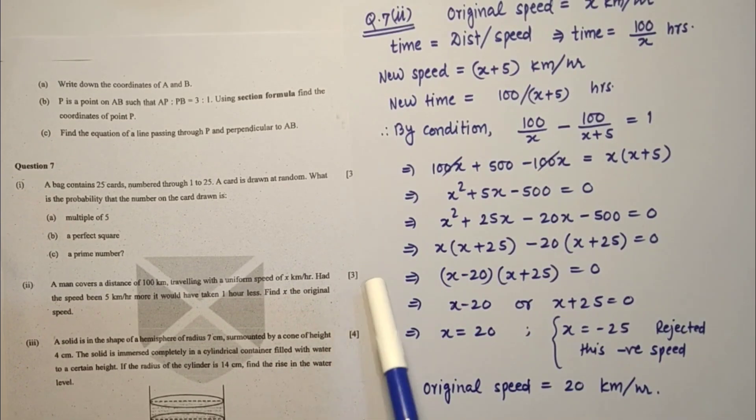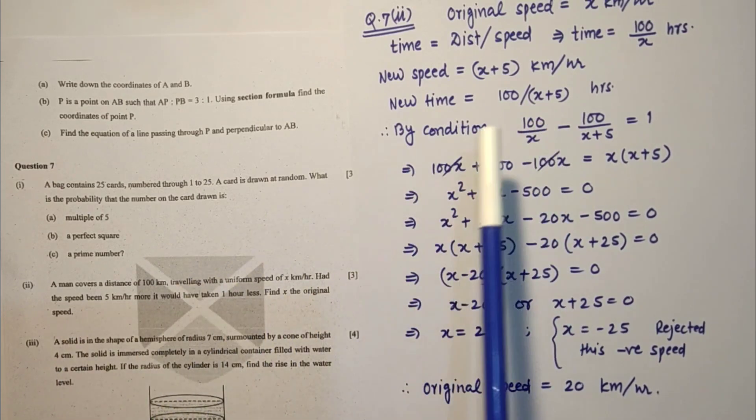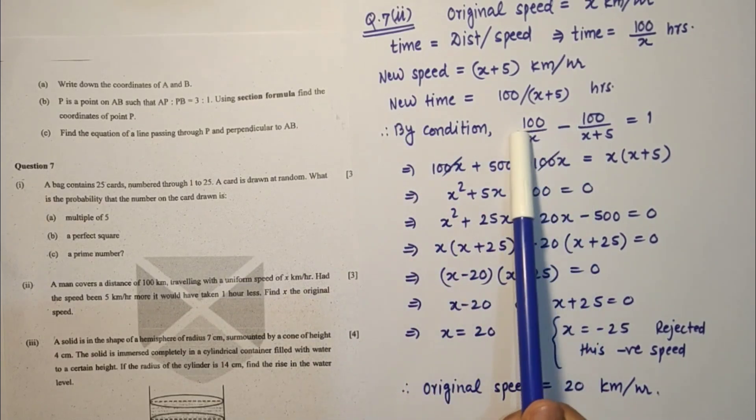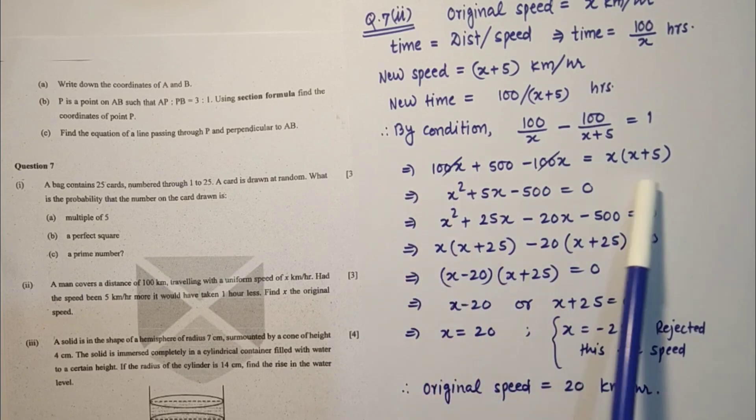Question number 7 second sub part. This question is word problem based on quadratic equation. Original speed we have considered X. By condition we form this equation. After simplification we are getting original speed as 20 kilometers per hour, that is the answer.